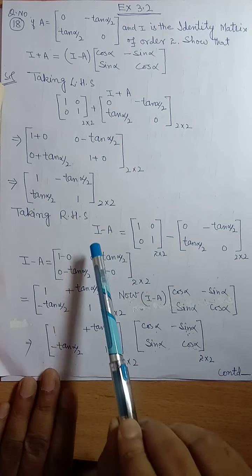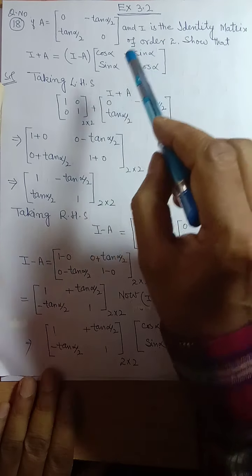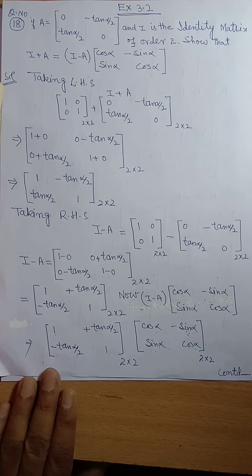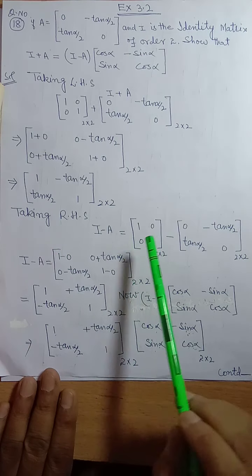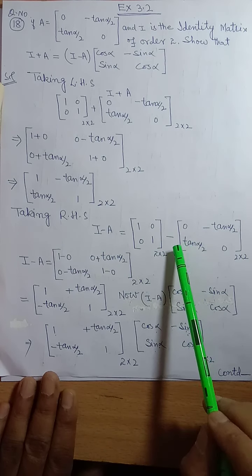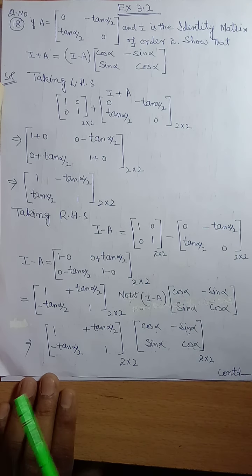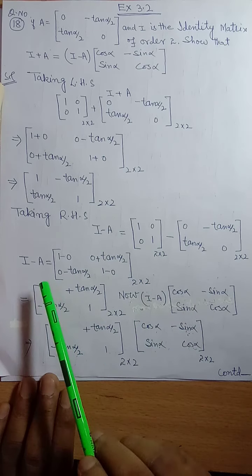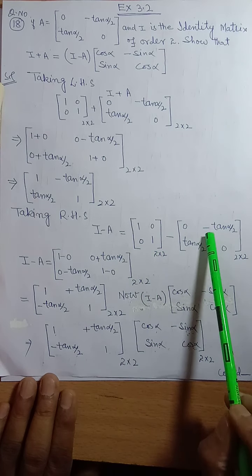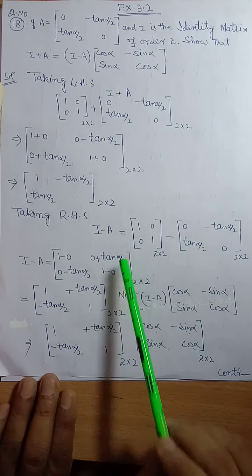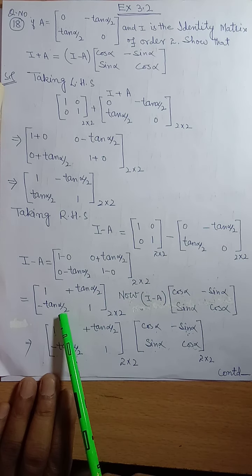Taking the RHS, I minus A. So I minus A equals [1, 0; 0, 1] minus [0, -tan(alpha/2); tan(alpha/2), 0]. Both are order 2 cross 2 so we can subtract them. So I minus A equals [1 minus 0, 0 minus (-tan(alpha/2)); 0 minus tan(alpha/2), 1 minus 0] which gives [1, tan(alpha/2); -tan(alpha/2), 1].